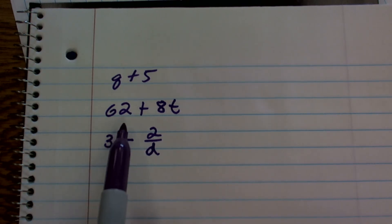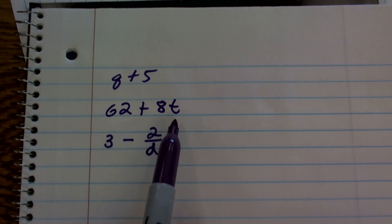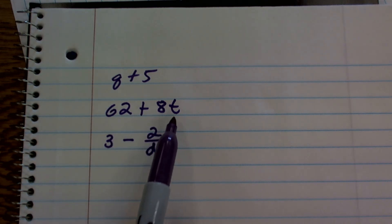Same thing here. I could say 62 increased by—it's not 8 or T alone, but what is happening between 8 and T. Since 8 and T are being multiplied, you could say '62 increased by the multiplication of 8 and T' or 'the product of 8 and T.'